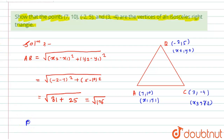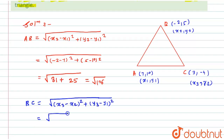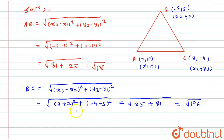Now I will calculate the length of BC. By using the distance formula, BC = √[(x₃ - x₂)² + (y₃ - y₂)²]. Substituting the values: (3 - (-2))² + (-4 - 5)² = (5)² + (-9)² = 25 + 81 = 106. So the length of BC is also √106.